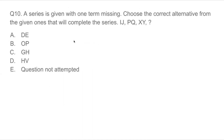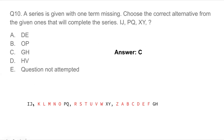Question 10: A series is given with one term missing — choose the correct alternative to complete the series: I, J, P, Q, X, Y and then C, G, H. Looking at the pattern: I, J — then skipping K, L, M, N, O — that's 5 letters skipped. Then P, Q — skipping R, S, T, U, V, W — that's also letters skipped. The pattern involves pairs with increasing gaps.